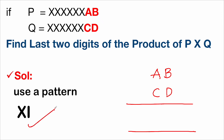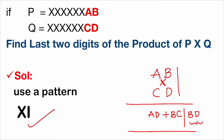The pattern is called X and I. I indicates the product of the unit digits, that is B×D. X indicates the cross-multiplication summation, that is A×D plus B×C. So AD+BC gives the value for X. Take the last digit of I, and if there is a carry, add it to X. Then take the second last digit of X to form your answer.